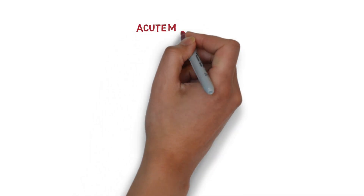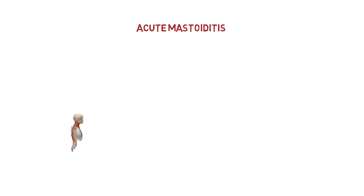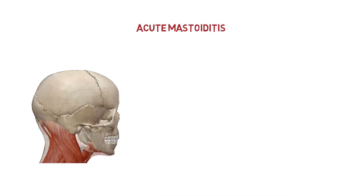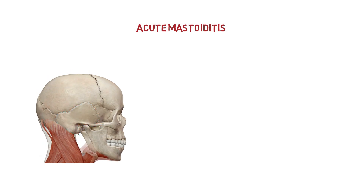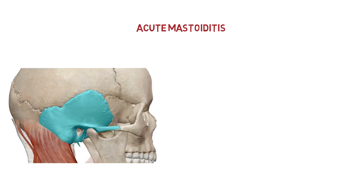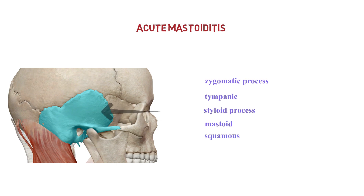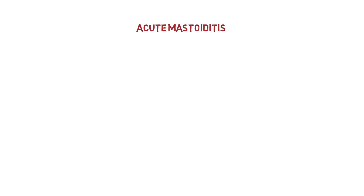Today we are going to talk about acute mastoiditis. This is the whole human skull and this is the temporal bone. The temporal bone contains several parts: the zygomatic process, tympanic, styloid process, retromastoid, and squamous. Today we are going to focus on the mastoid part. So what is mastoiditis?